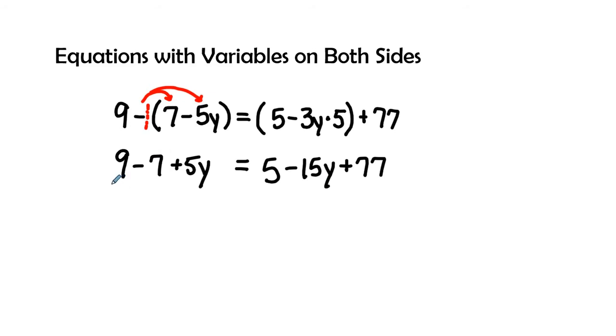So let's see what we can combine. On this side, it looks like we can combine 9 minus 7. And on this side, it looks like we could combine positive 5 and positive 77. So let's go ahead and do that. 9 minus 7 is 2. 2 plus 5y is equal to 5 plus 77 is 82 minus 15y. Sometimes when we're doing mental math, we have to check ourselves just because we feel like something just doesn't look right.